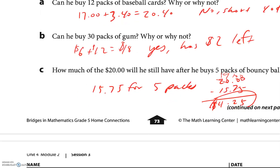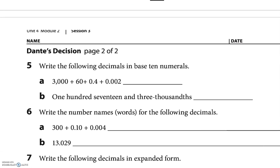Write the following decimals in base-10 numbers — you just squish the place values together. For the first one: 3,000, no hundreds, 60 in the tens place, no ones — that's 3,060. Then four hundredths and two thousandths gives 0.042, so the full number is 3,060.042. The next one is 117 and three thousandths: 117.003.